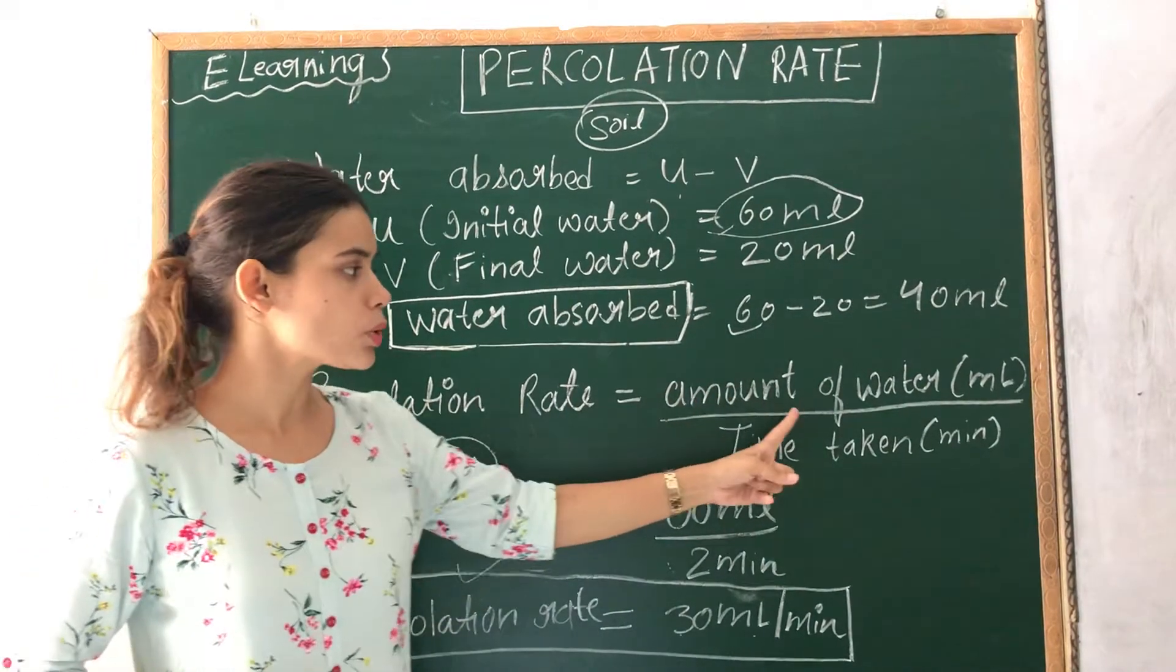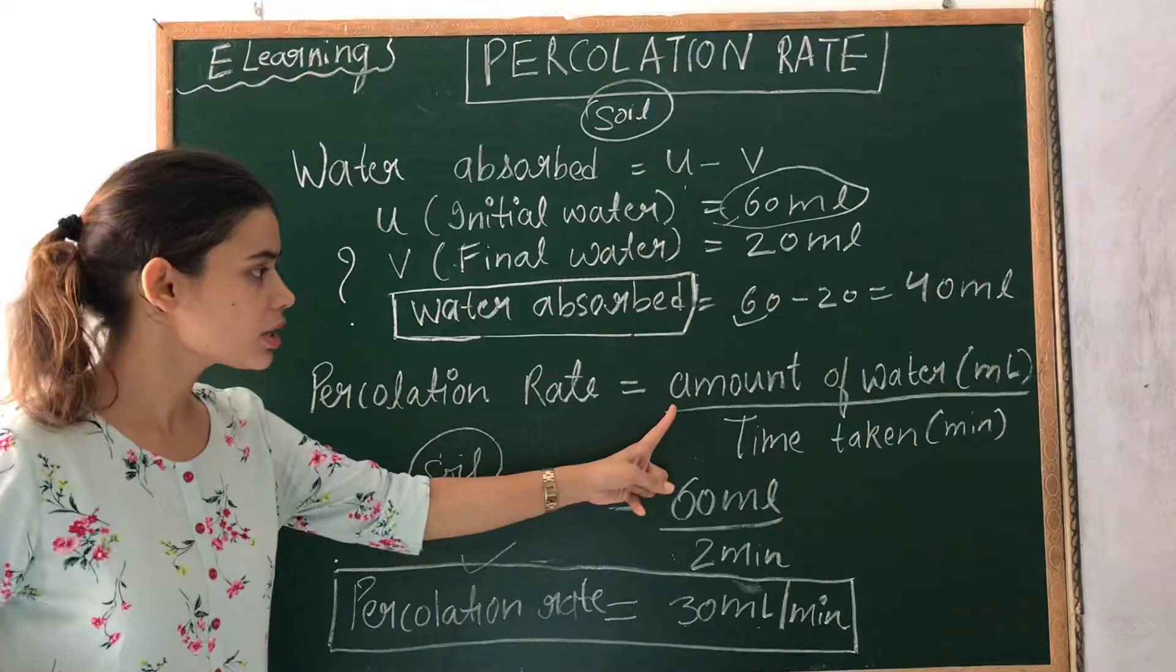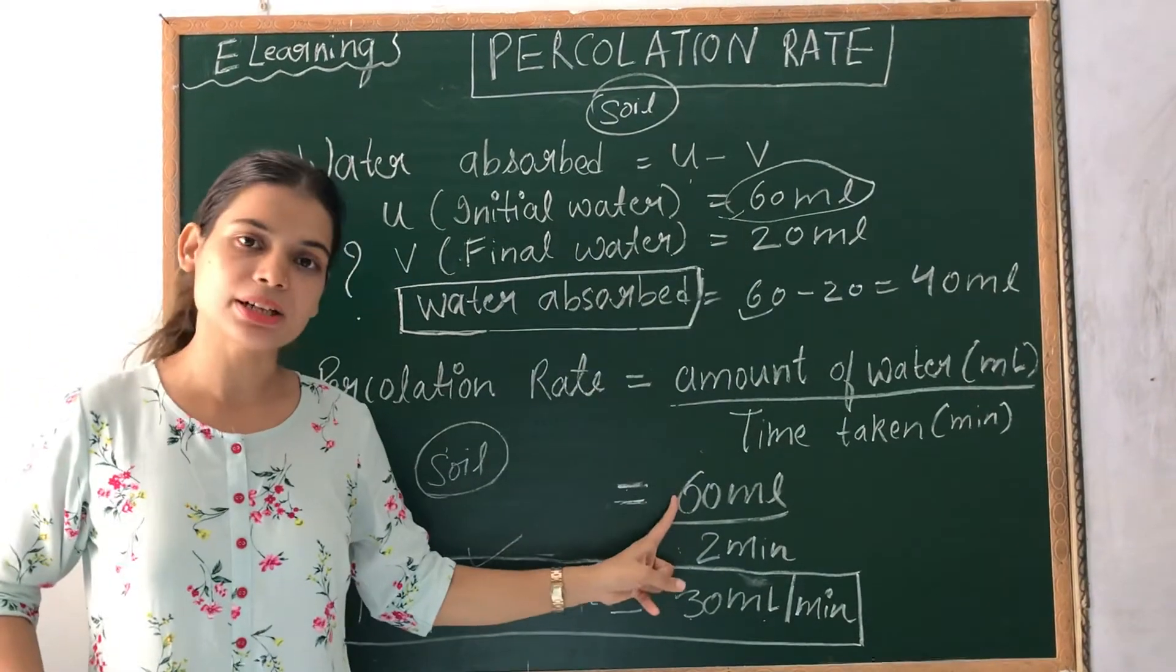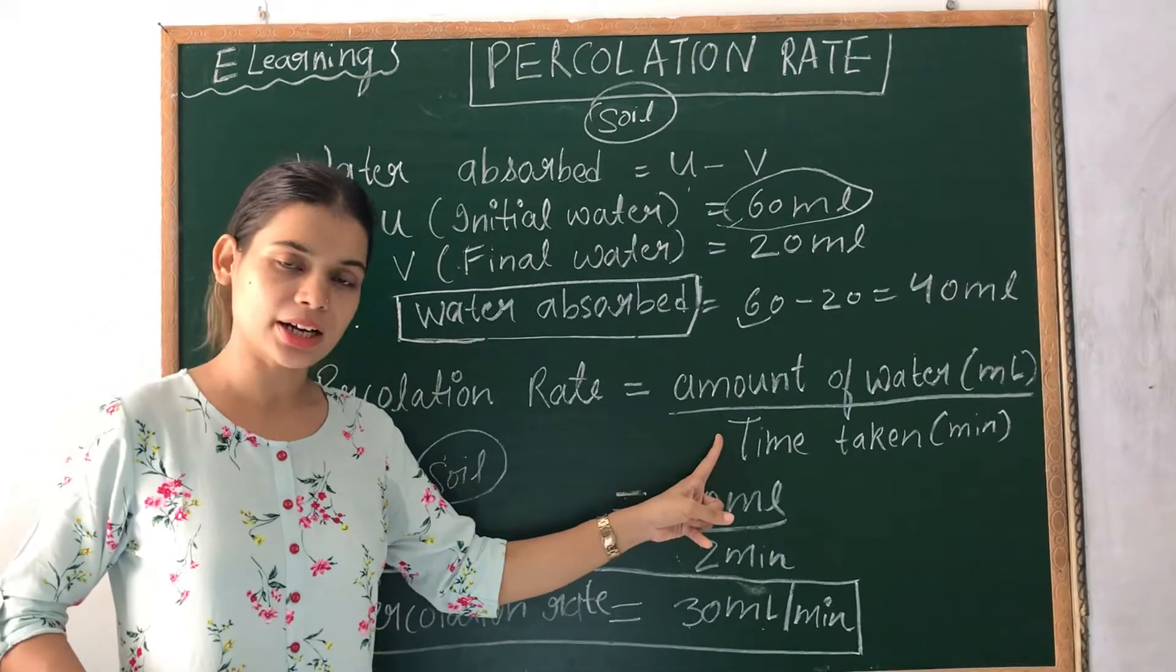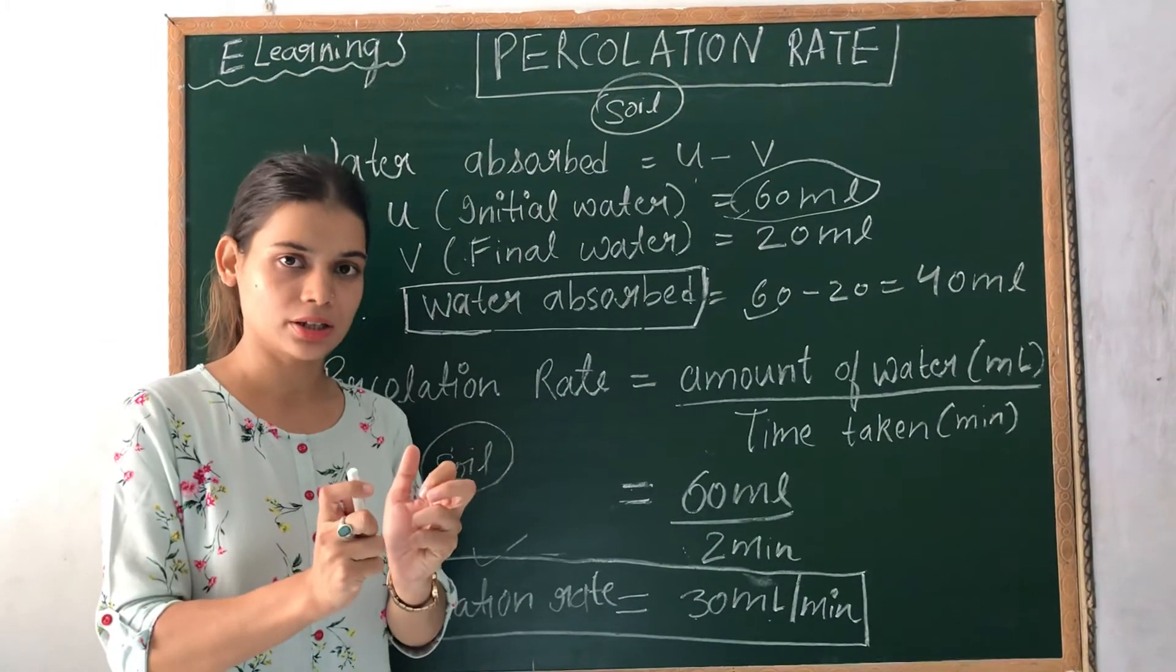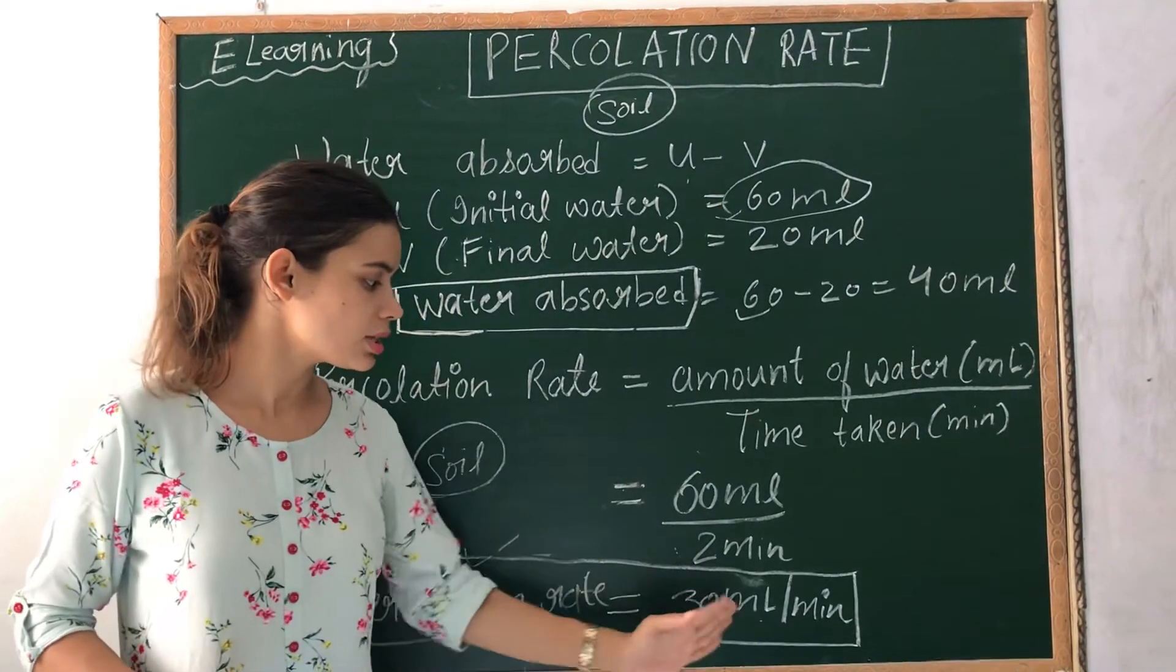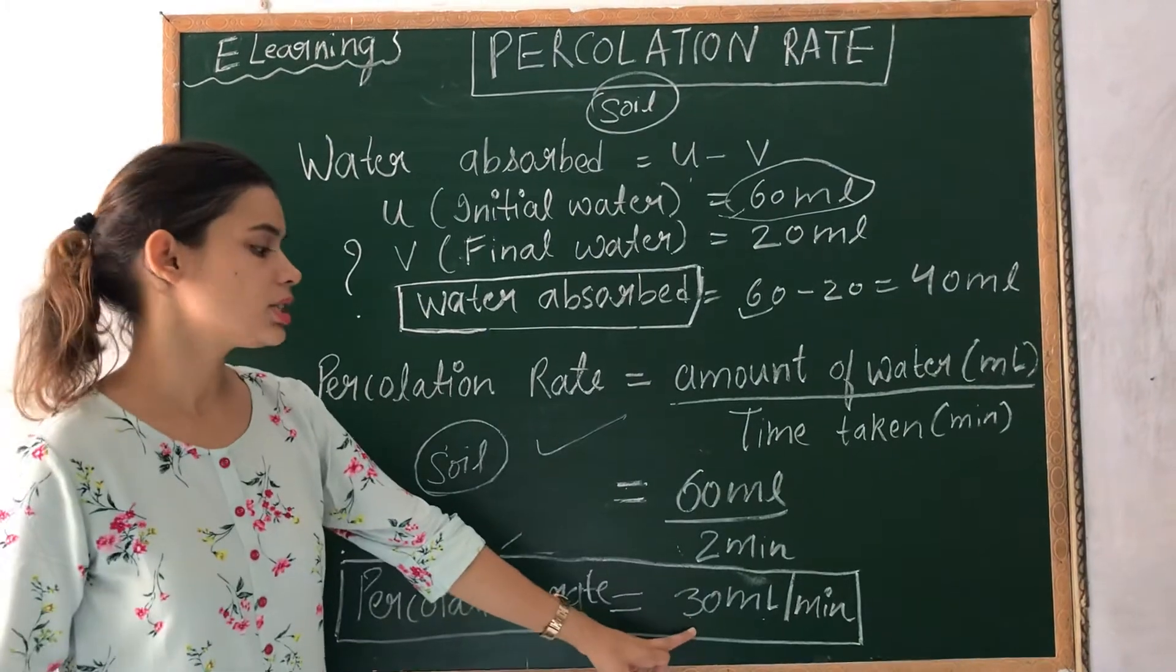The formula for that is amount of water divided by time taken. The amount of water we took was 60 ml, so 60 ml divided by 2 minutes. In the experiment it took 2 minutes for the water to stop percolating. Dividing, we get 30 ml per minute. So the percolation rate is 30 ml per minute.